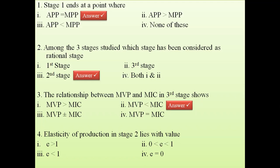The fourth question: Elasticity of production in stage two lies between zero and one. Stage two ends at a point where MPP equals zero, so elasticity (MPP/APP) equals zero. Stage two starts where MPP equals APP, making elasticity equal to one. So the value lies between zero and one.